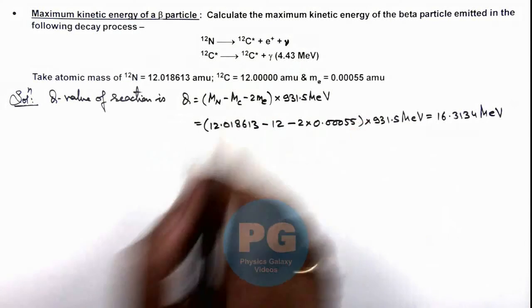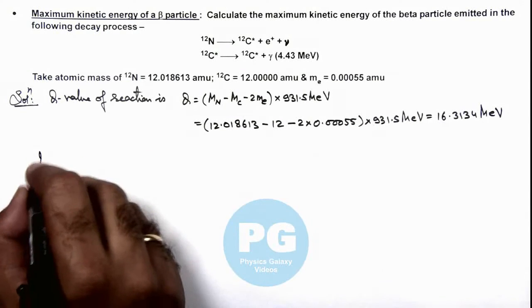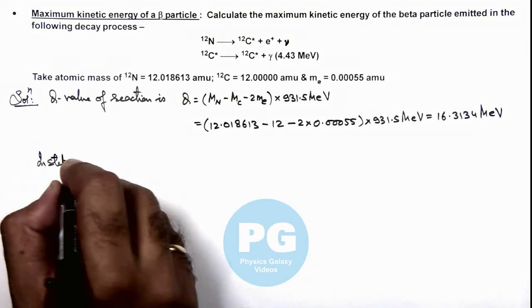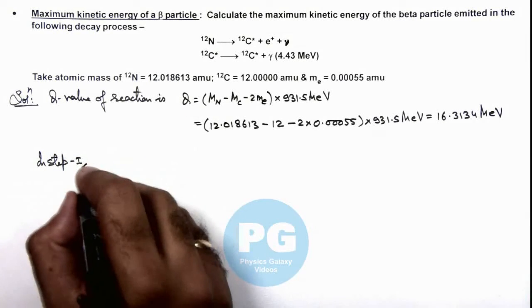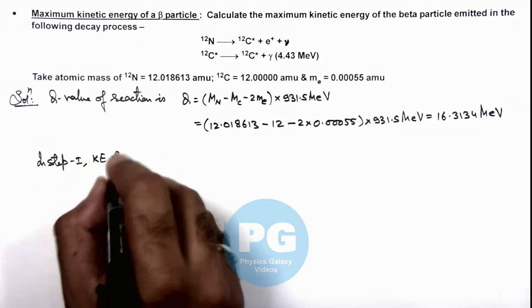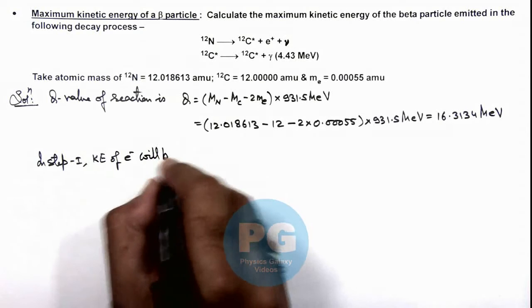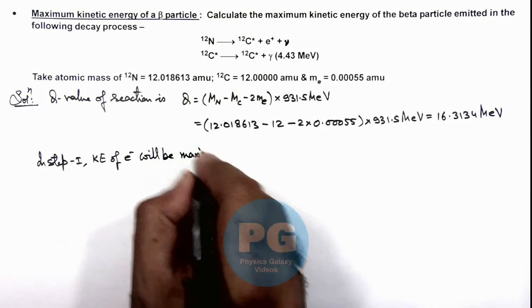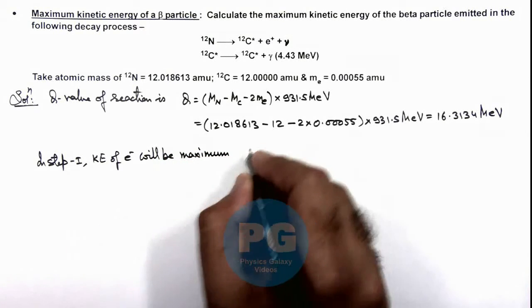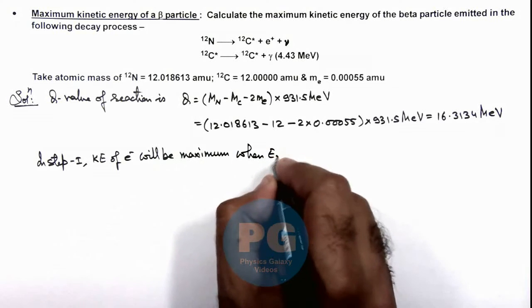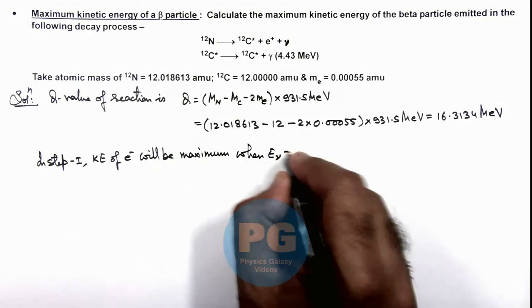In step 1 of this reaction, we can write the kinetic energy of the electron will be maximum when the energy of the neutrino is equal to zero, so that whole energy which is emitting out will be shared between carbon and electron.